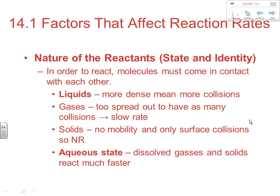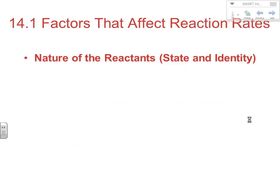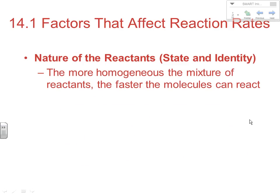Case in point: precipitation reactions with metathesis double replacement. In pre-AP chemistry you did a lab where you put two solutions together, the cations formed an insoluble precipitate, and it was almost instantaneous that you would see the solid precipitate out of solution. Another thing that can affect reaction rates related to the nature of the substances is the identity of those substances. The more homogeneous a mixture is, the faster the molecules can react because the particles are more evenly mixed together. If they're not homogeneous, substance A may not be near substance B to cause the reaction to occur.